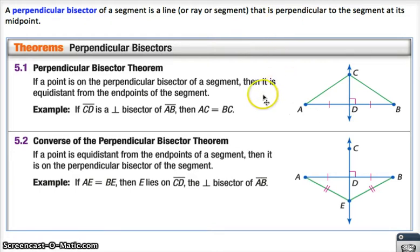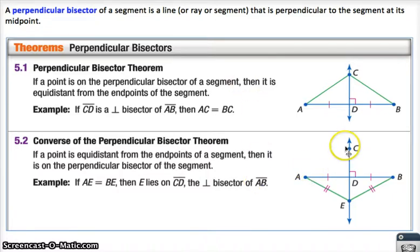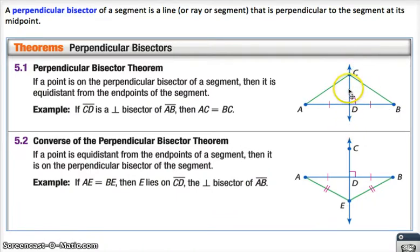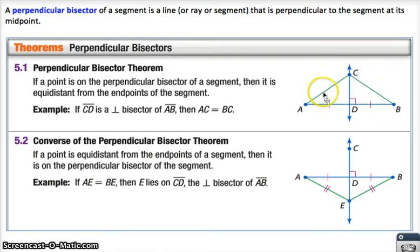Here are two theorems about this, and this is a biconditional. We'll put it as a biconditional on the theorem sheet for your test, so you don't have to worry about which one's which. They both have to do with the same picture. If you have a segment and you draw the perpendicular bisector, then it turns out any point on the perpendicular bisector — like point C here — has to be the same distance from the endpoints of that segment.